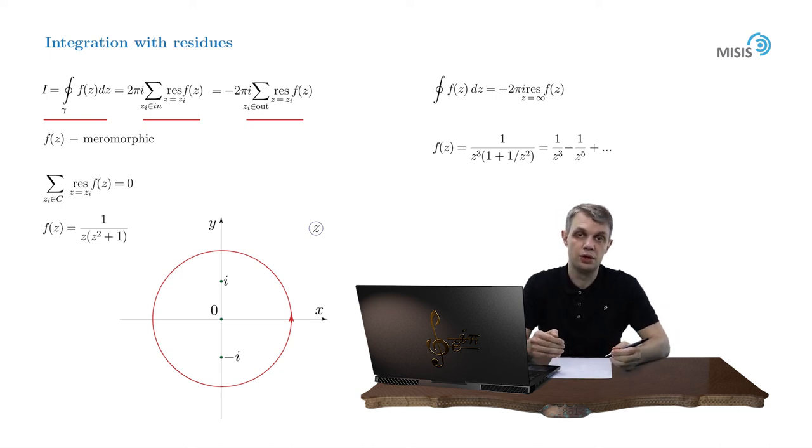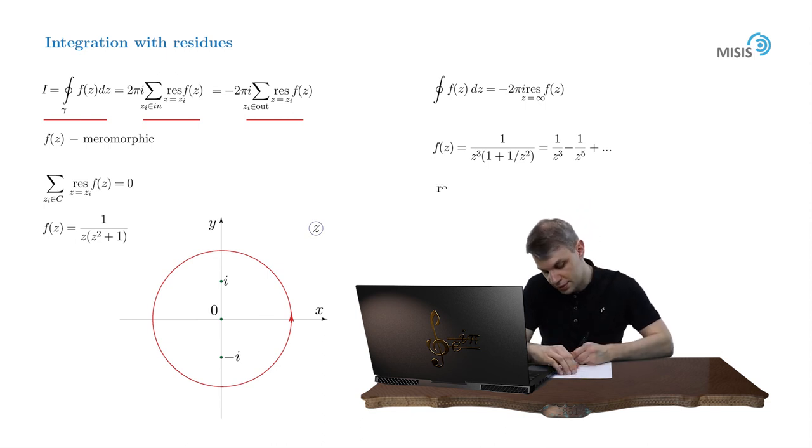And we see that there is no 1/z term because the function just decays too fast. And this way the residue at infinity is equal to 0. And so the integral itself is 0.